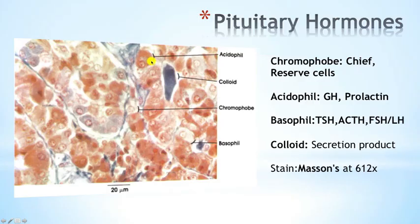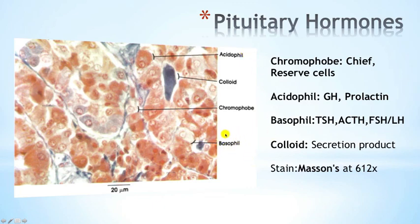Under a Masson stain at 612x magnification, we can see these cell types again: acidophils, basophils, and the small chromophobes. Under the acidophil population we have lactotrophs, which produce prolactin, and somatotrophs, which produce growth hormone. Under the basophil category we have thyrotrophs producing TSH, gonadotrophs producing FSH and LH, and corticotrophs producing ACTH. Chromophobes are essentially reserve cells, and the colored areas represent secretion products.